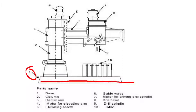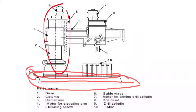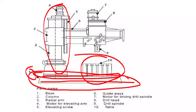The base is a large rectangular casting which is finished on its top to support a column at one end and to hold the work table at the other end. It is a large rectangular casting — machining or finishing is done on the top to support the column. On the base, two components are situated: first is your column, and second is your work table.